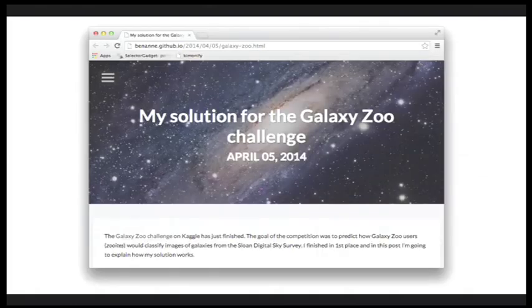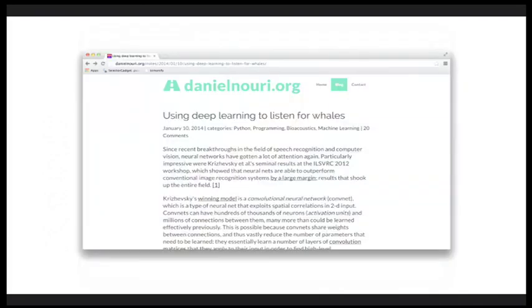A number of Kaggle competitions have actually been won using convolutional neural networks. This one to classify galaxies needed four convolutional layers and three fully connected layers. It finished first, and this blog post goes into a lot of detail into what the author did to win the challenge. Also, for speech recognition, convolutional neural networks work quite well.